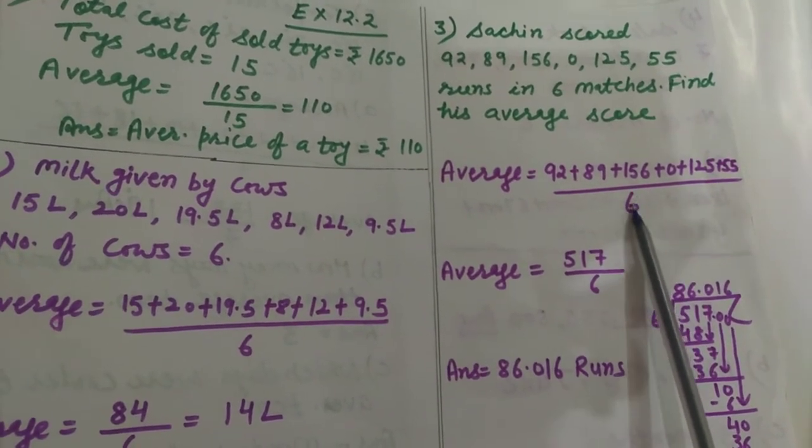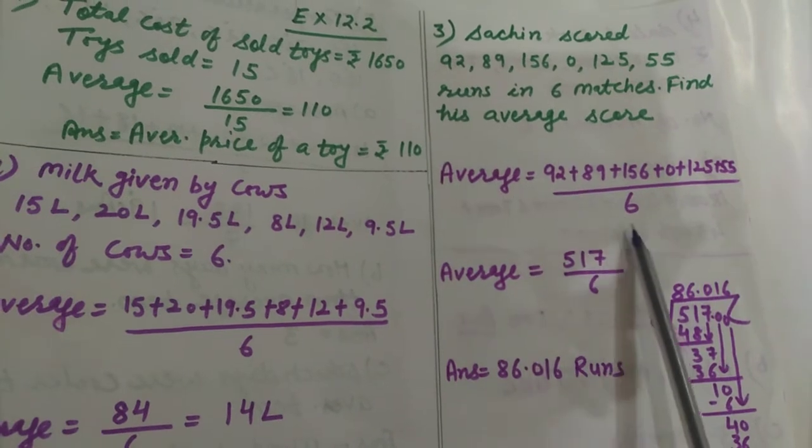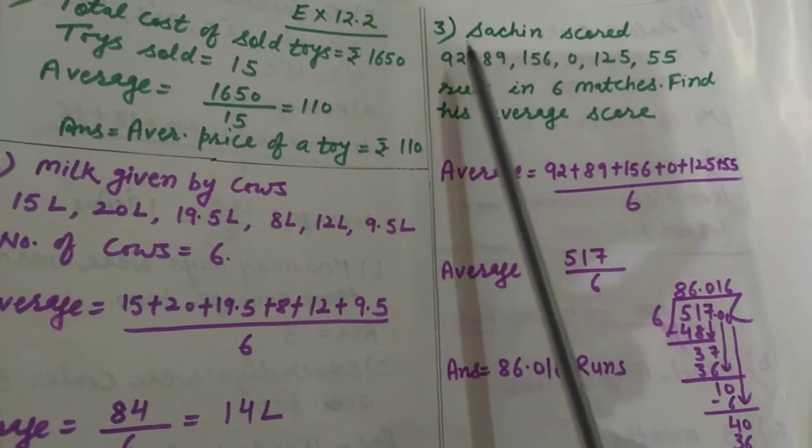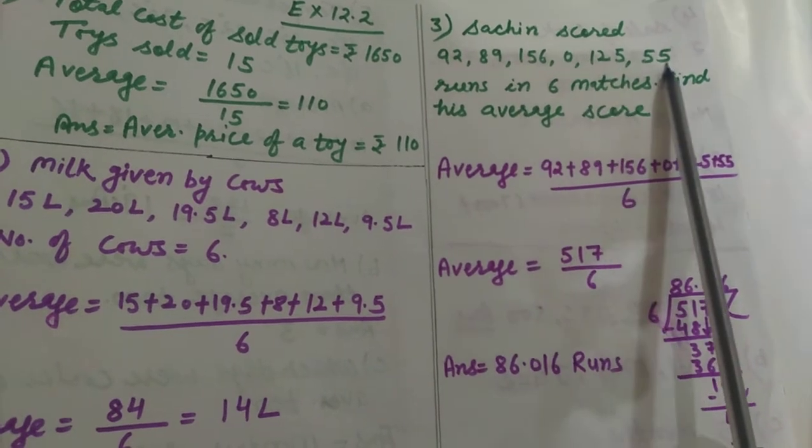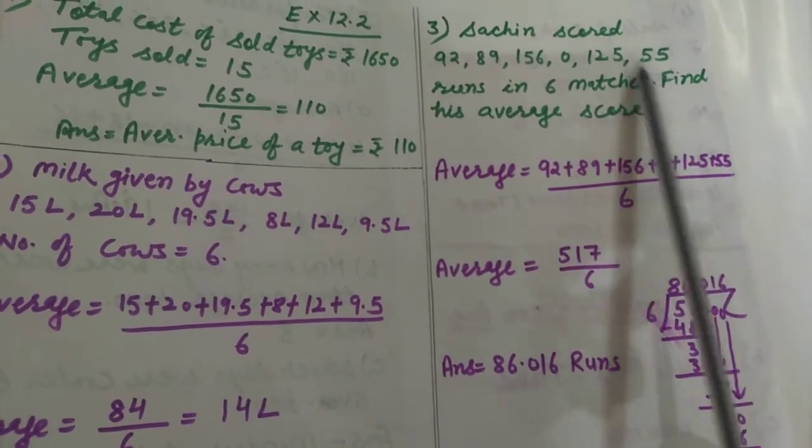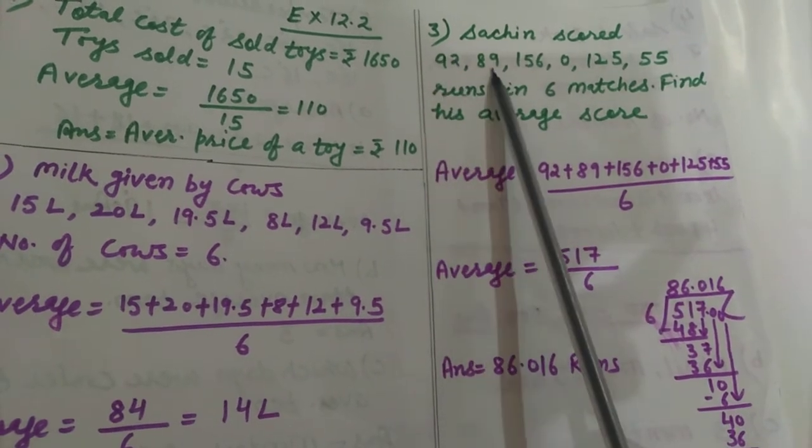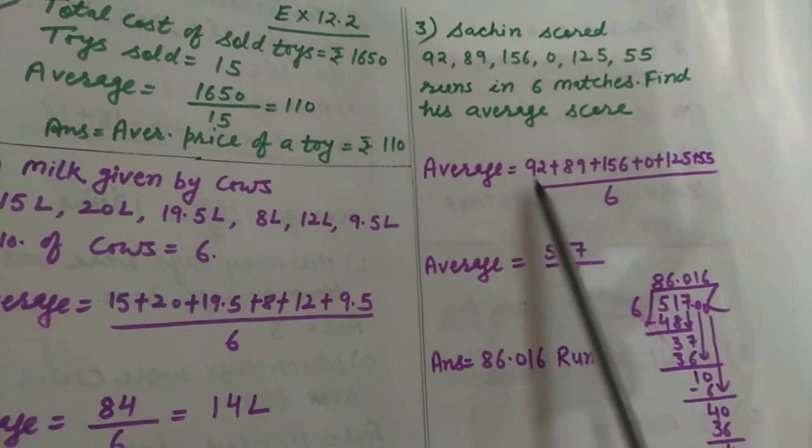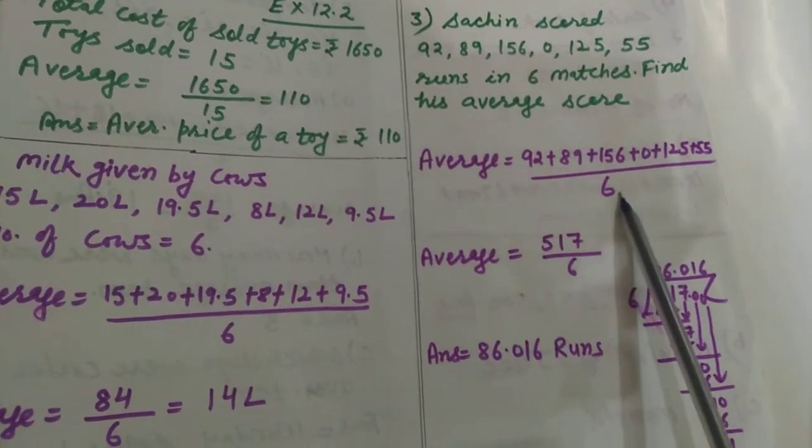Yeh aapne mind mein rakhna hai yahan par. Upon aapne 6 likhna hai. Kyunki kuch bacche yahan 0 ko count nahi karte hain to wo 1, 2, 3, 4, 5 likh dete hain. But yahan par kitne hain total jitne matches usne play kiye hain: 1, 2, 3, 4, 5, 6. 6 matches ke yeh runs given hain. To number of matches 6 aayega yahan par.